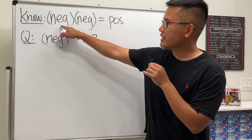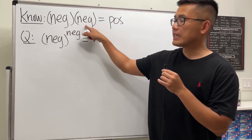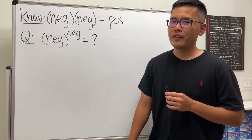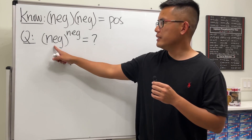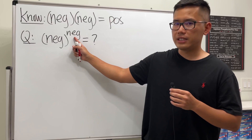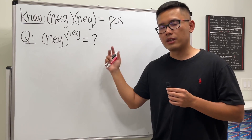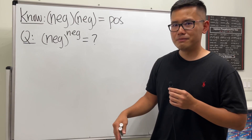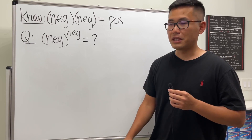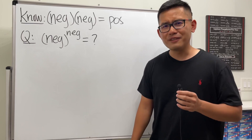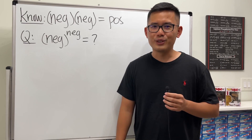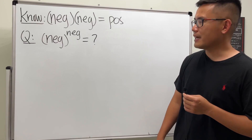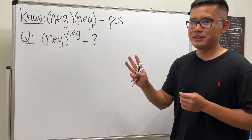As we all know, when we have a negative number times a negative number, we will always get a positive number. But have you ever thought about what if we have a negative number raised to a negative power? What kind of number are we going to get — positive, negative, something else? Pause the video and think about this first. The answer is we can actually have three possibilities.